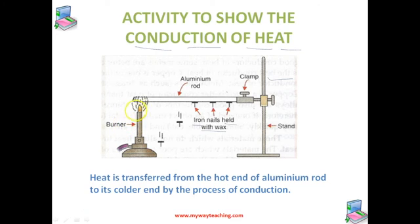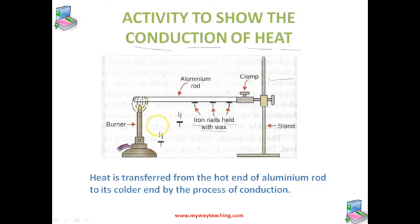Eventually, we see that the iron nails attached to the aluminium rod with wax start falling one by one. The nail attached nearest to the heated end falls down first, then the second, then the third, and so on. The nail attached to the clamped end of the rod drops last of all.